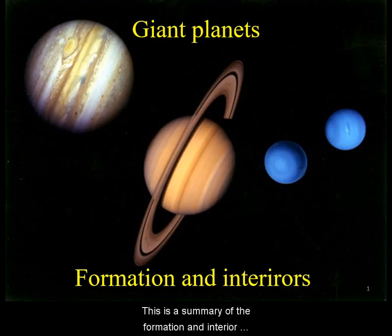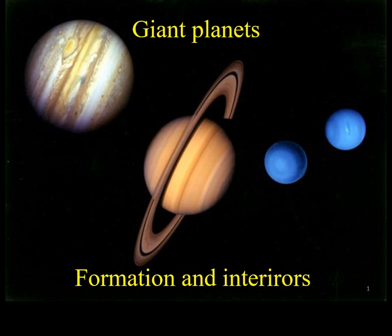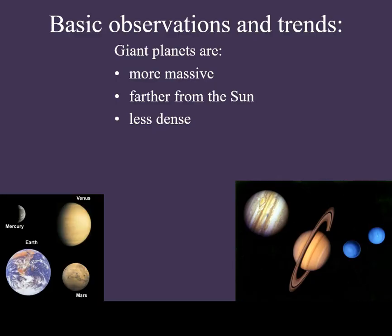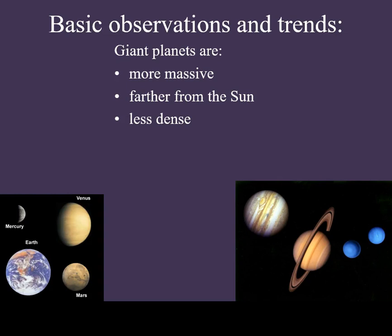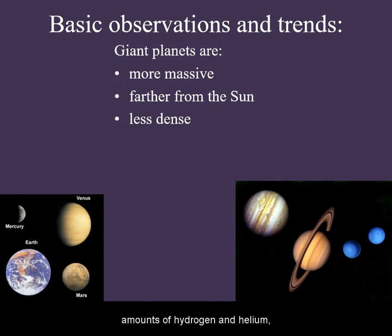This is a summary of the formation and interior structure of the giant planets in our solar system. Giant planets are different from terrestrial planets — they are much more massive, they orbit the Sun at larger distances, and they are less dense. Their lower density is mostly due to them having large amounts of hydrogen and helium, the lightest of elements.